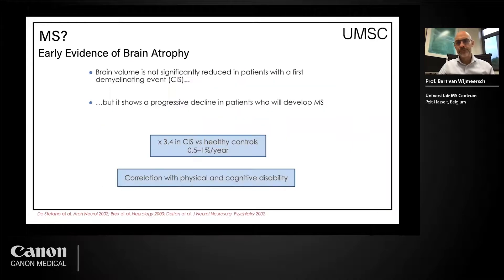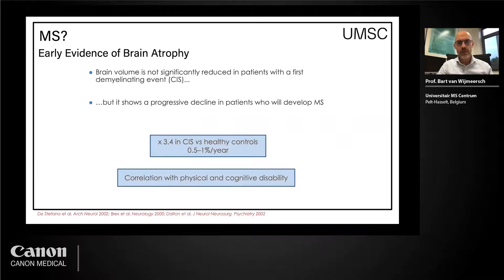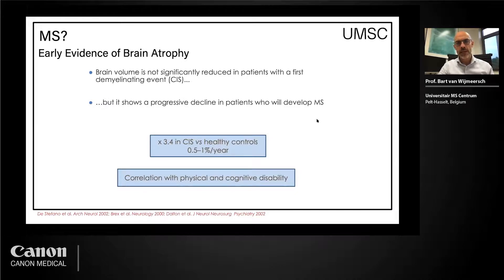The brain volume starts quite normally even in CIS, but then there is a progressive decline of brain volume, at a rate three or four times faster than in healthy controls. Due to diffuse inflammation, you get a lot of stress on the brain environment. Normally you should have below 0.4% of brain atrophy per year. In MS it's higher — up to about 1% sometimes — and this correlates very well with physical and cognitive disabilities.